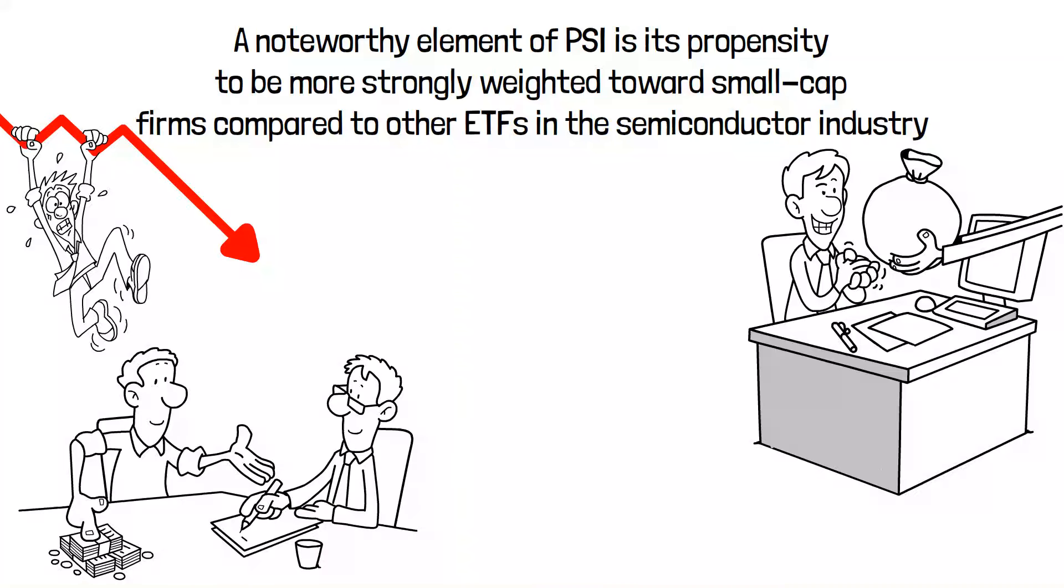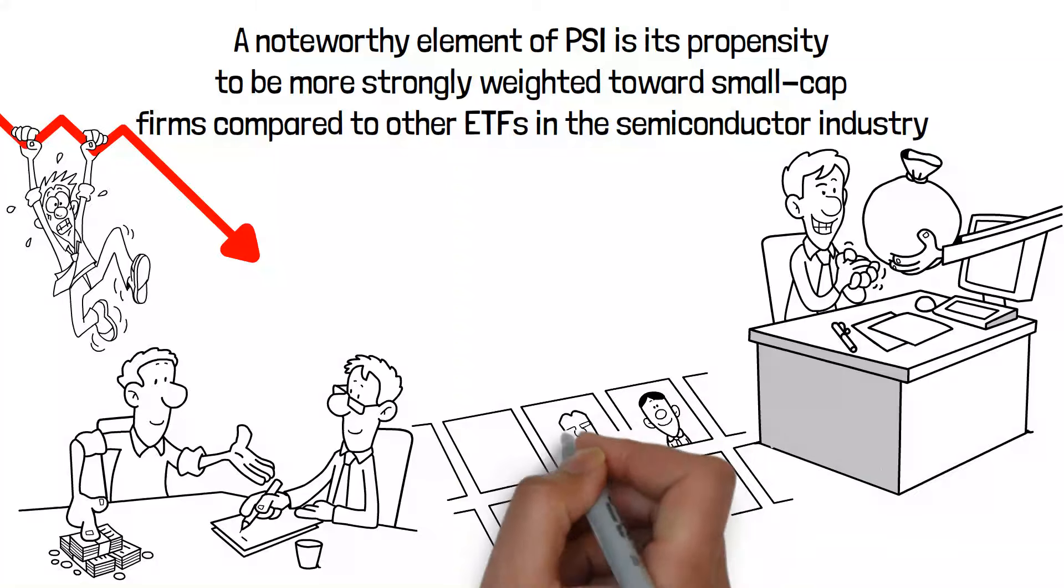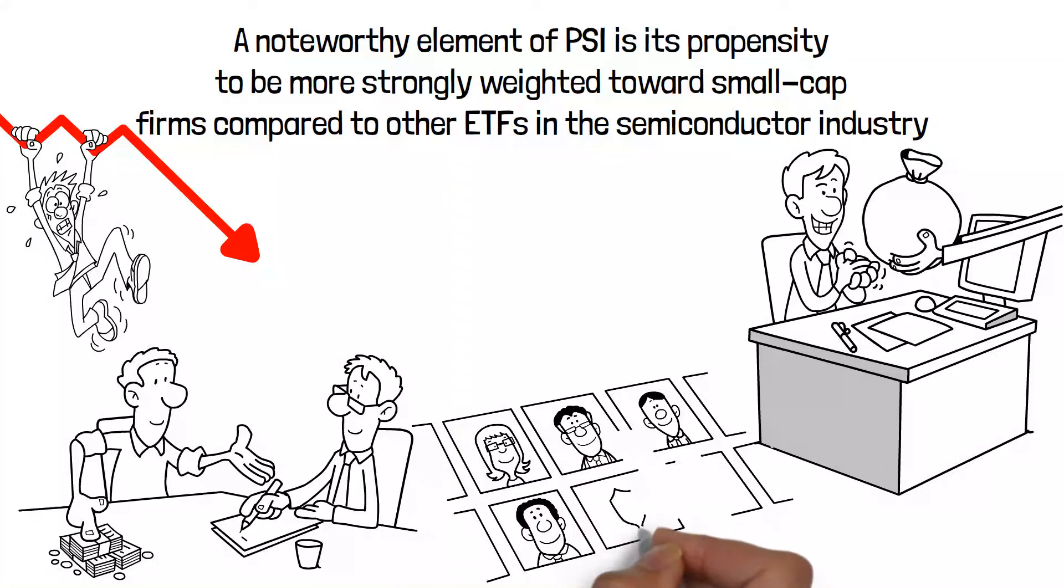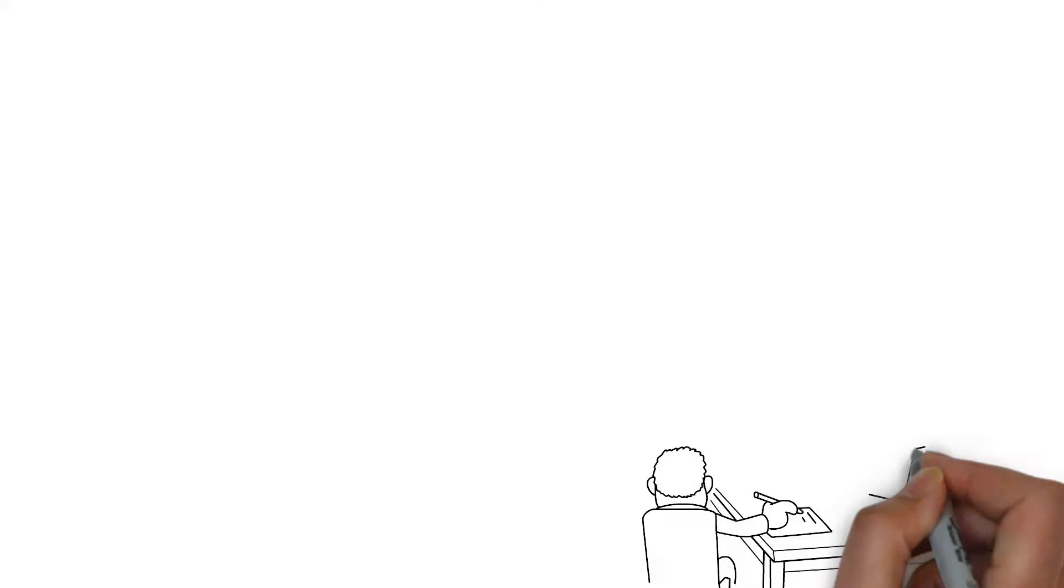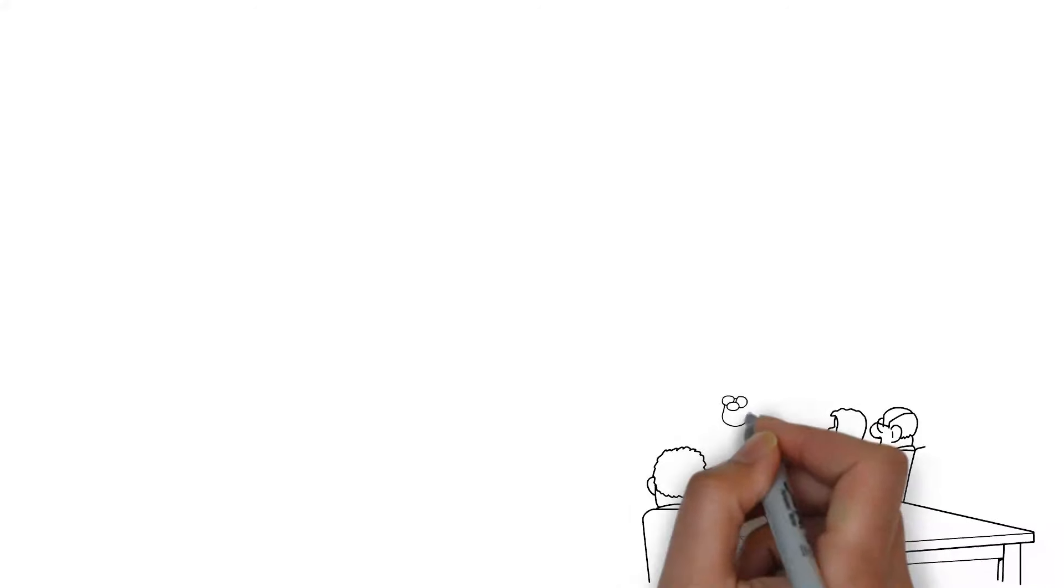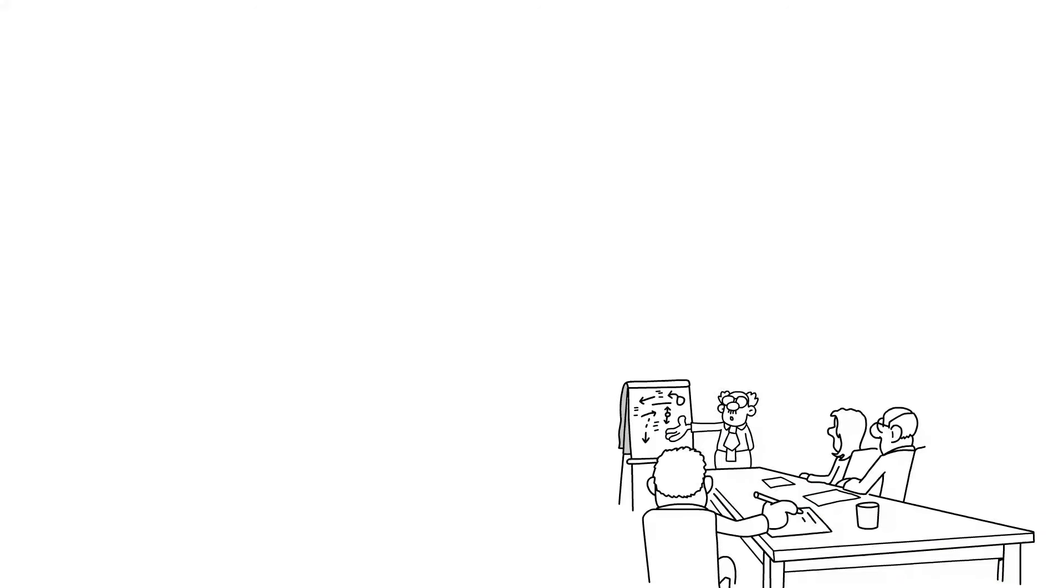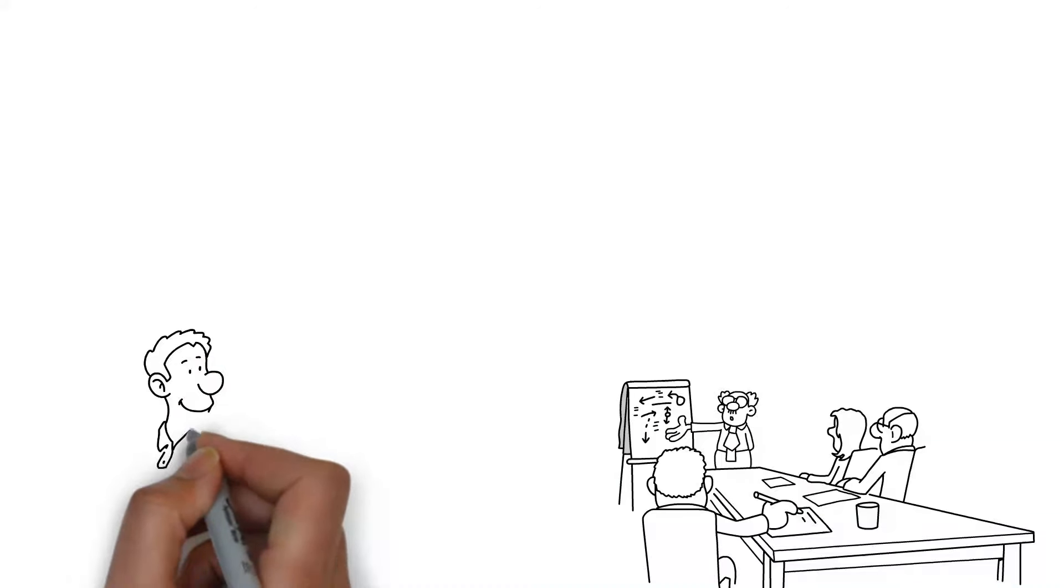Investing in small-cap businesses may give exposure to quick growth potential in segments that may be less saturated than those controlled by bigger enterprises. The Invesco Dynamic Semiconductors ETF (PSI) gives investors exposure to a carefully chosen variety of semiconductor businesses via a strategy that balances risk and opportunity. Its past performance, strategic assets, and operating structure make it an appealing alternative for anyone interested in investing in the semiconductor industry's expansion.